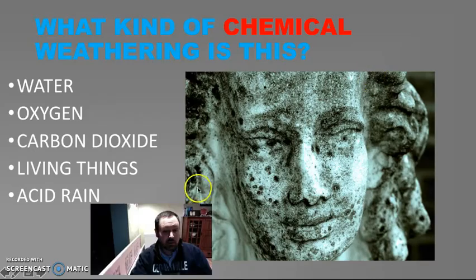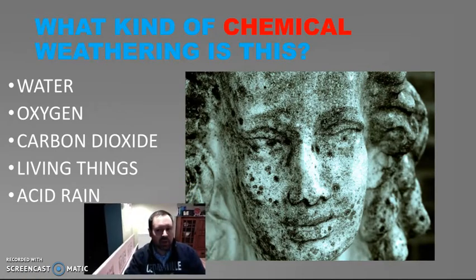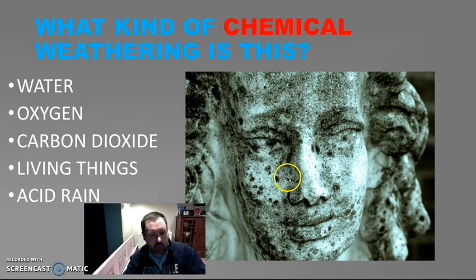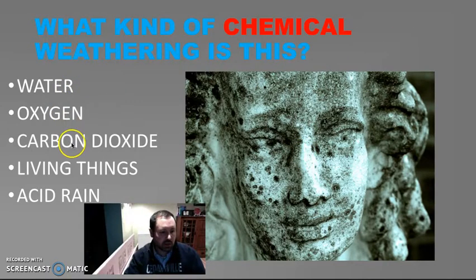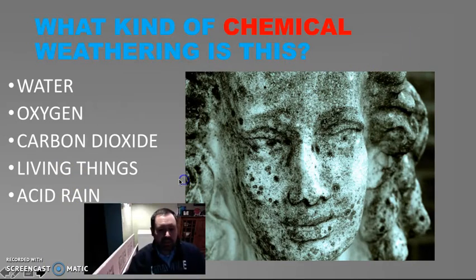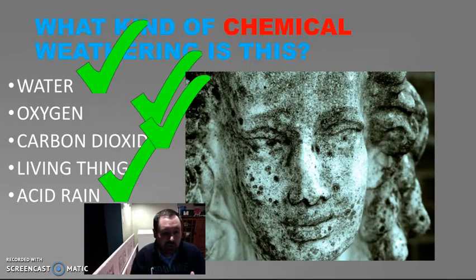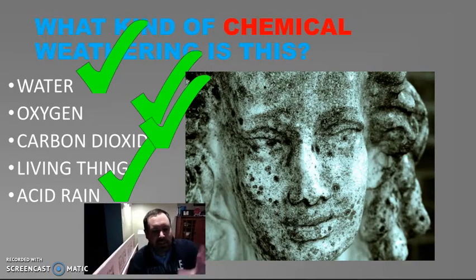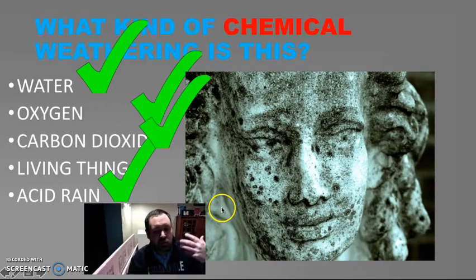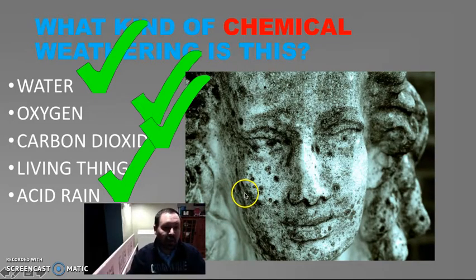Now let's talk about chemical weathering. What kind of chemical weathering is happening here? We've got a statue and it doesn't look like it probably originally did — it doesn't have the same detail. Was it water, oxygen, carbon dioxide, living things, or acid rain? Well, take a look — it's actually a bunch of different things working together: water, oxygen, carbon dioxide, acid rain. When it comes to chemical weathering, it's usually several things working together, and that's what causes a lot of chemical weathering.